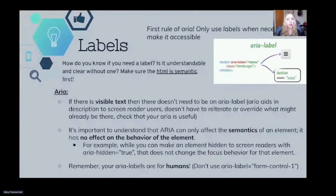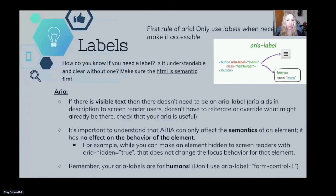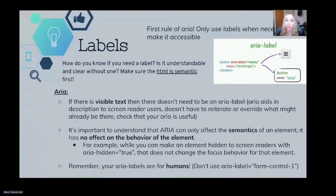How do you know if you need a label? The big question to ask is: is it understandable and clear without one? The very first step is making sure your HTML is semantic — this is incredibly important because everything builds off of semantic HTML. If there is visible text, there probably doesn't need to be an ARIA label. ARIA adds description to screen reader users; it doesn't have to reiterate or override what might already be there. So check that your ARIA is useful. ARIA can only affect the semantics of an element — it has no effect on the behavior of the element. For example, when you make an element hidden to screen reader users with aria-hidden='true', that does not change the focus behavior for that element, just the way it's announced to a screen reader. Remember, your ARIA labels are for humans — please don't use aria-label='form control one' or something like that.